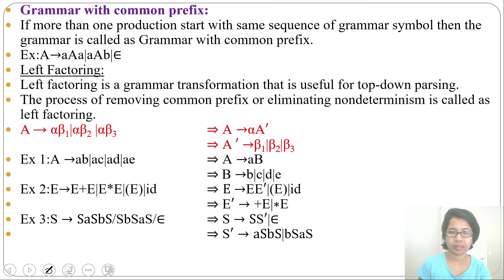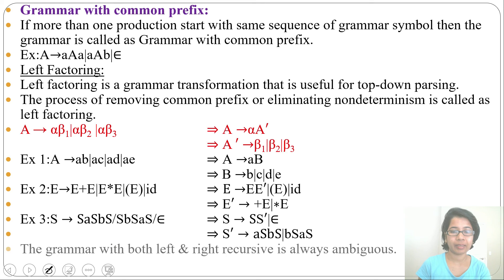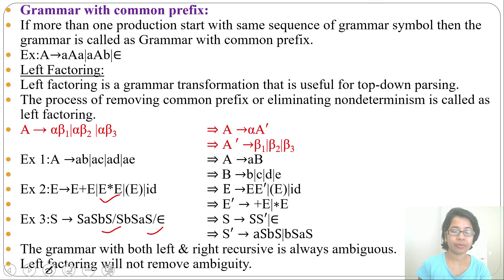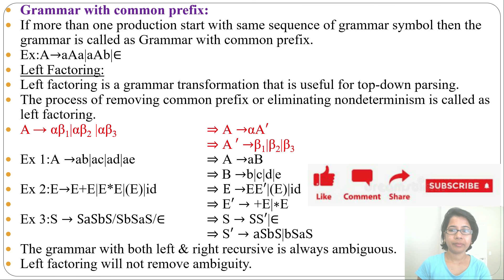Note: a grammar with both left and right recursion is always ambiguous. This grammar is both left and right recursive, so it is ambiguous. Left factoring only removes common prefixes — it does not remove ambiguity. Ambiguity in expression grammars can be removed by associativity or precedence rules. Removing common prefixes does not mean we are removing ambiguity; the resulting grammar can still be ambiguous. If this lecture was helpful, please like and subscribe.